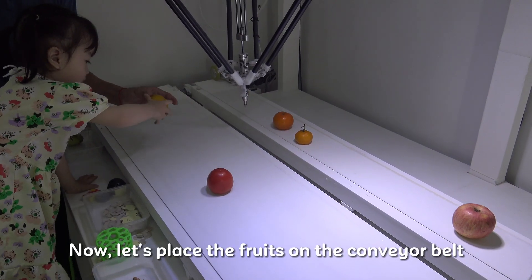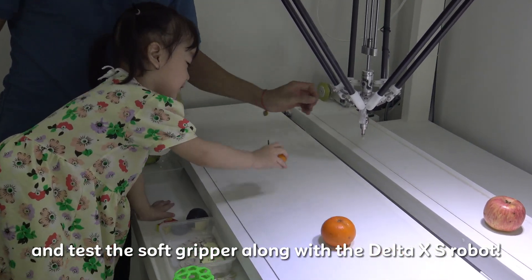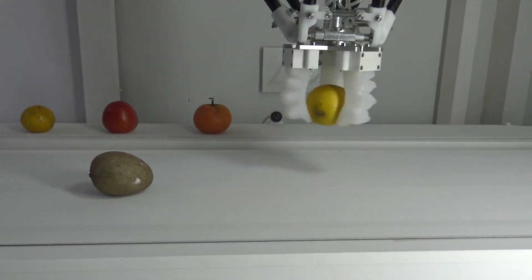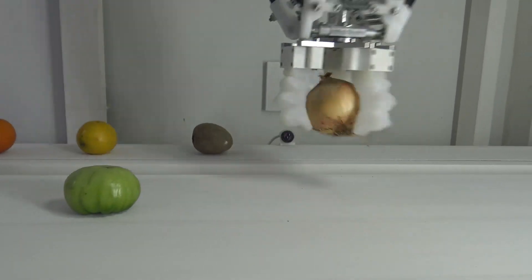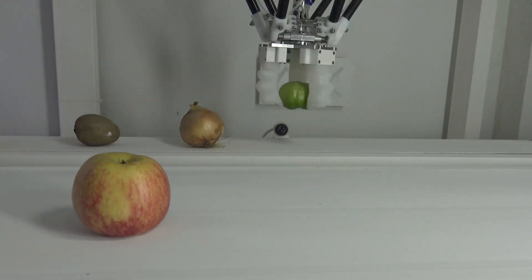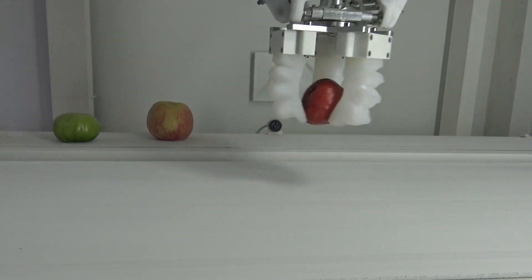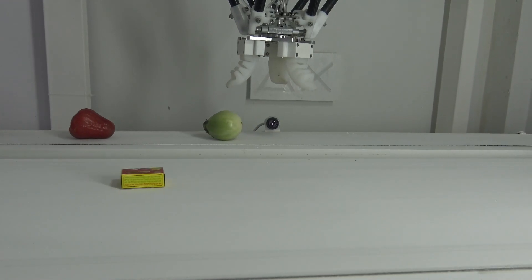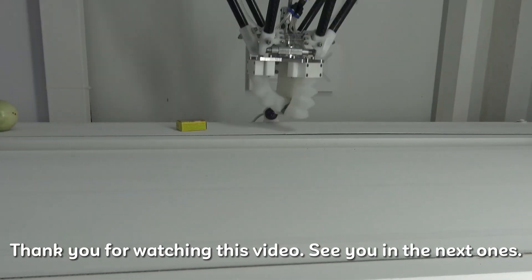Now, place the fruits on the conveyor belt and test the soft gripper along with the Delta XS robot. It looks great indeed. Thank you for watching this video.